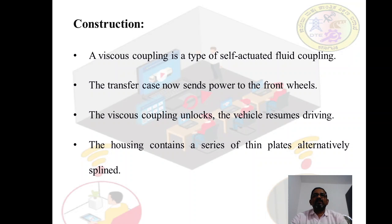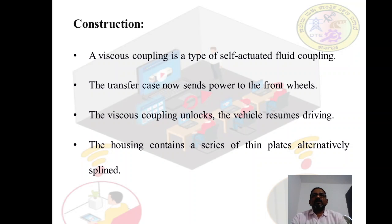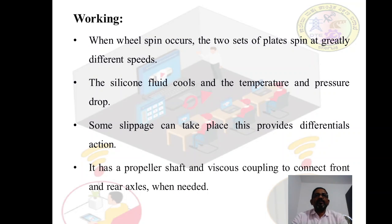When the rear wheels regain traction and begin turning at the same speed as the front wheels, the viscous coupling unlocks and the vehicle resumes driving only the rear wheels. The housing of the viscous coupling is attached to and driven by an input shaft. The housing contains a series of thin plates alternatively splined to the housing and to the output shaft. The coupling is filled with 90 percent silicon fluid and 10 percent air, and the housing is sealed to prevent leakage and hold the pressure that locks the coupling.